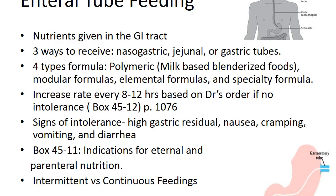Internal tube feeding is where nutrients are given directly into the GI tract for patients who have a functioning GI tract. There are three ways: the nasogastric tube (nose to stomach), the jejunal tube, and the gastric or PEG tube. Gastric tubes are used when the patient has a low risk for gastric reflux and are often inserted percutaneously or endoscopically.